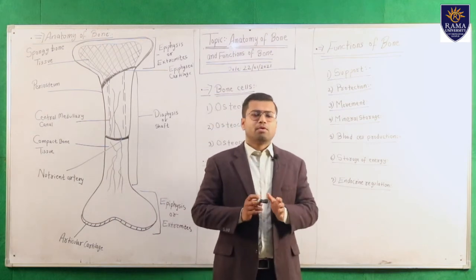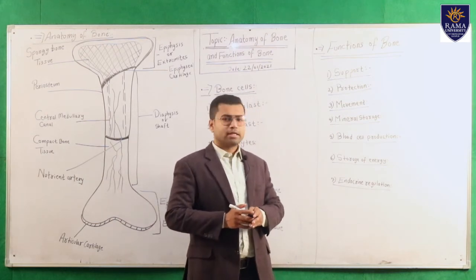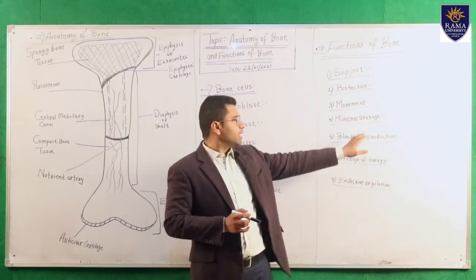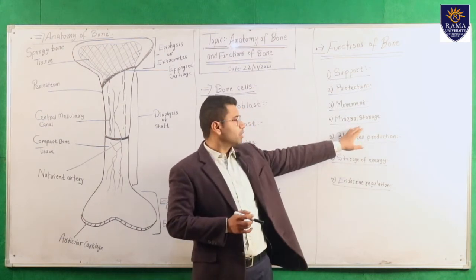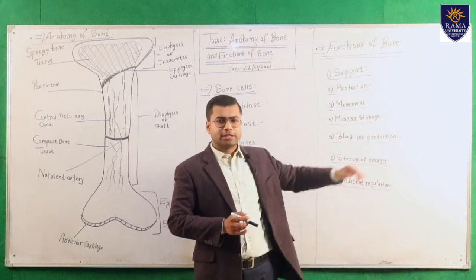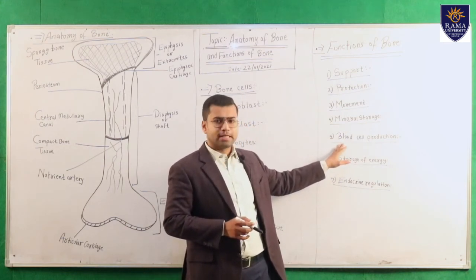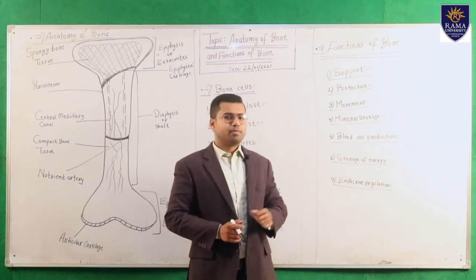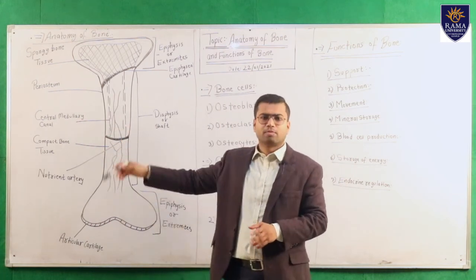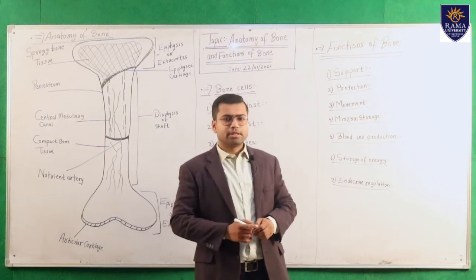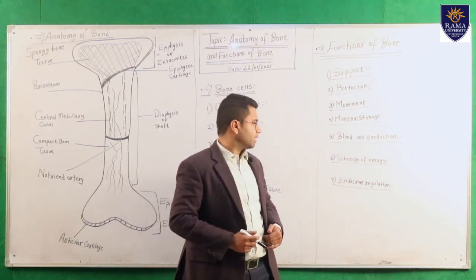The fourth function is mineral storage. Bone mainly stores calcium and phosphate salts. The fifth function is blood cell production — in the bone marrow within the central medullary canal, blood cells are produced.